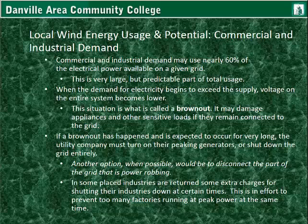During a brownout, the power doesn't go completely out — it just reduces the voltage, and lights will glow a sort of faint tan color, and that's where the name comes from. If a brownout has happened and is expected to occur for a long period of time, the utility company should turn on peaking generators. If that can't be done, that part of the grid experiencing the brownout needs to be shut off entirely, because it can ruin electrical equipment if run on lower voltage.